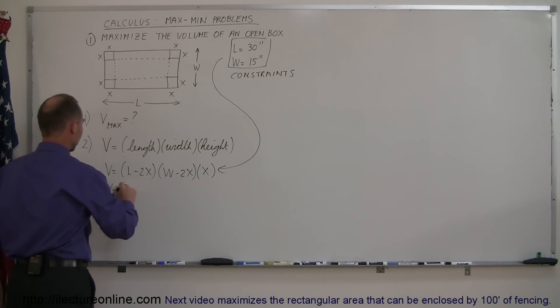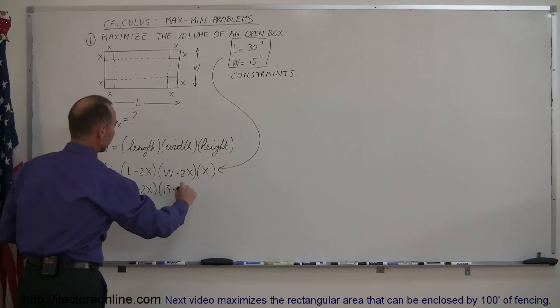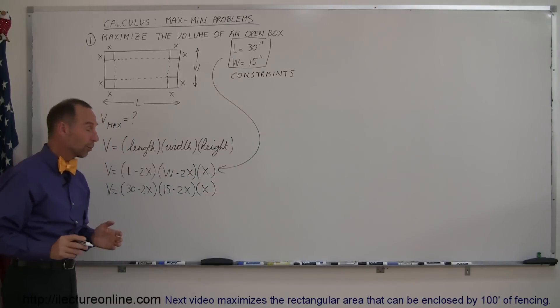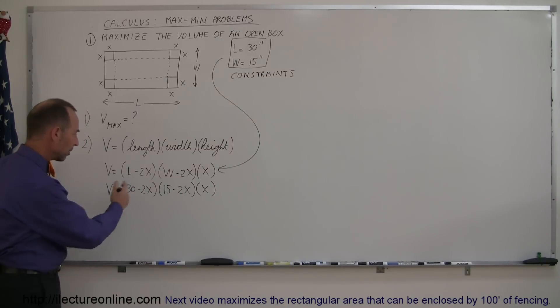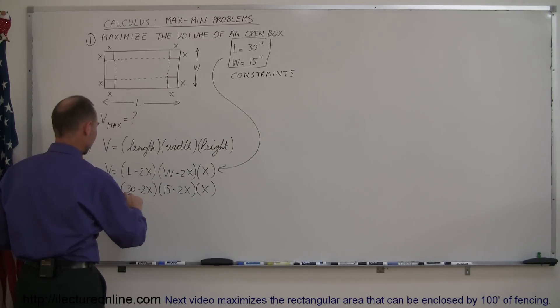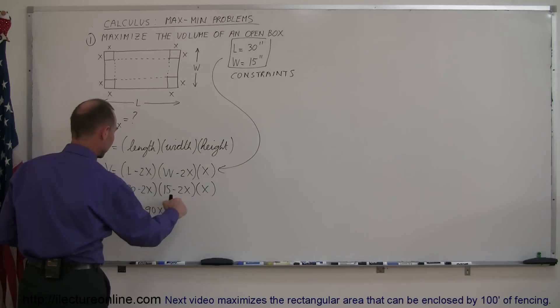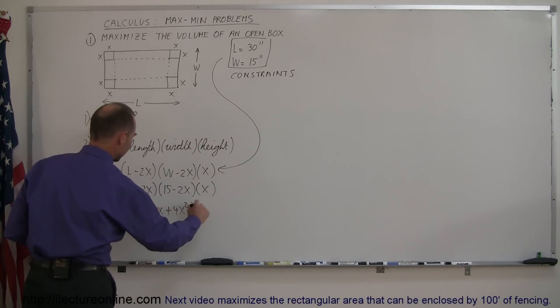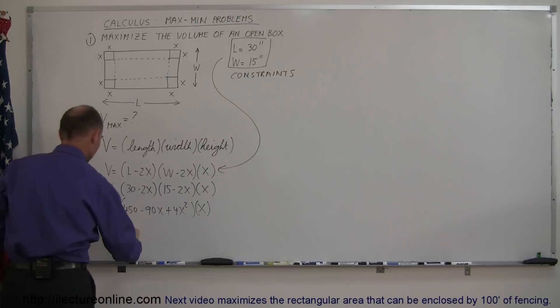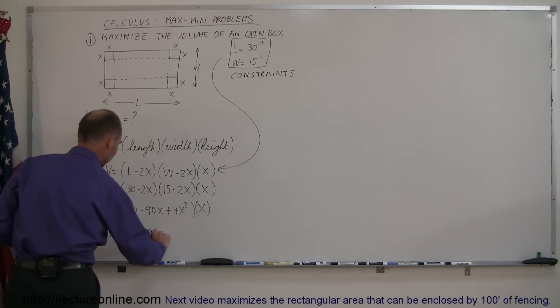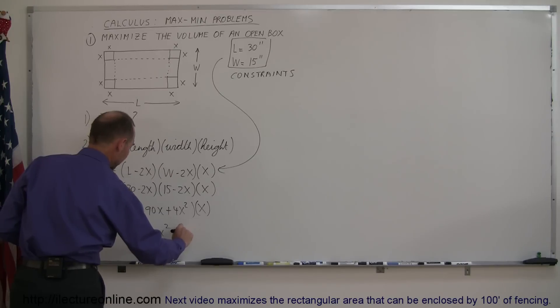Let's see what happens. So we have the volume is equal to the length, which in this case is 30 minus 2x times the width which in this case is 15 minus 2x times the height x. Now we have an equation for the volume with only one variable in it and that's what we want to do. So now we're going to simplify this equation by multiplying everything out. We have v equals 30 times 15, that's 450, 30 times minus 2x is minus 60x, 2x times 15 is minus 30x, that would be minus 90x, and then this times this, that would be plus 4x squared times x. Multiplying that x through and rearranging the equation, the volume is equal to 4x cubed minus 90x squared plus 450x.